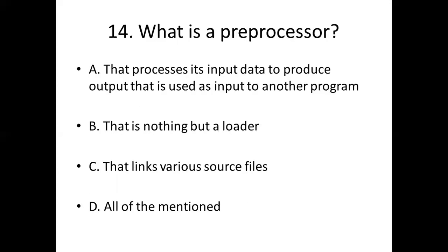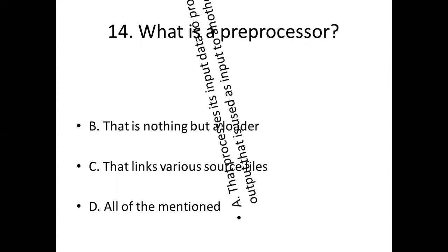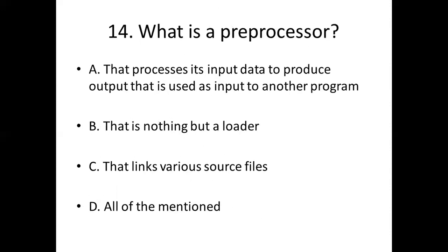Fourteenth bit. What is a preprocessor? Option A: that processes its input data to produce output that is used as input to another program. Option B: that is nothing but a loader. Option C: that links various source files. Option D: all of the mentioned. Answer: Option A, that processes its input data to produce output, then it is used as input to another program.